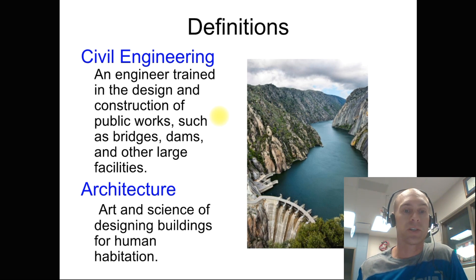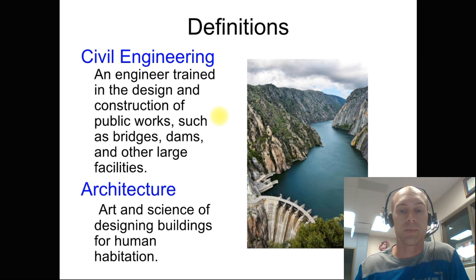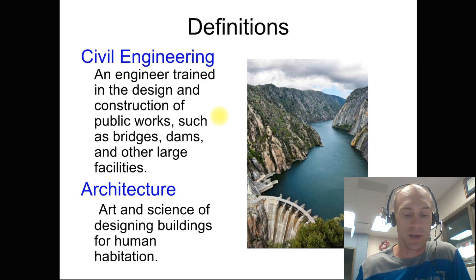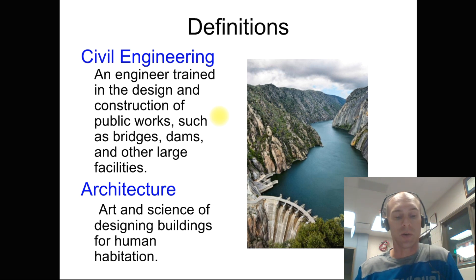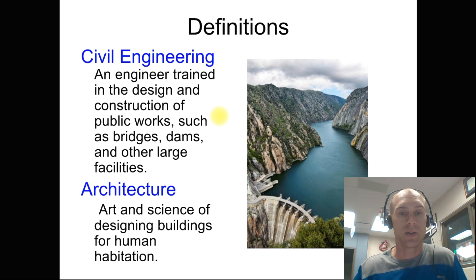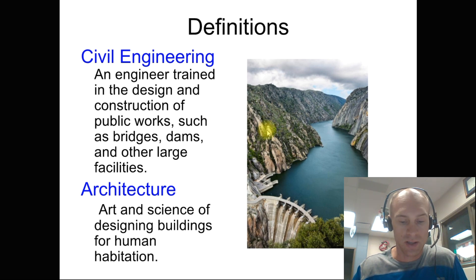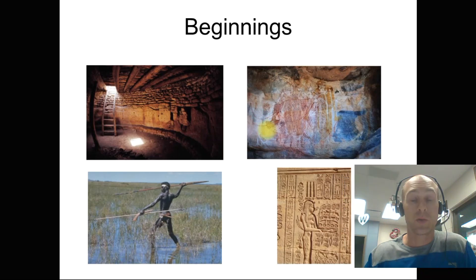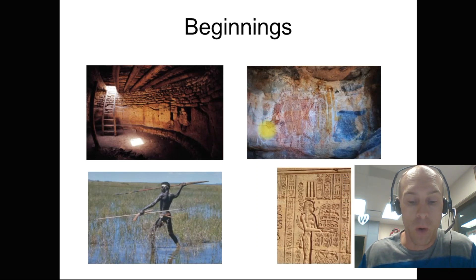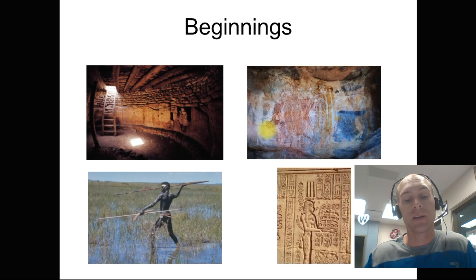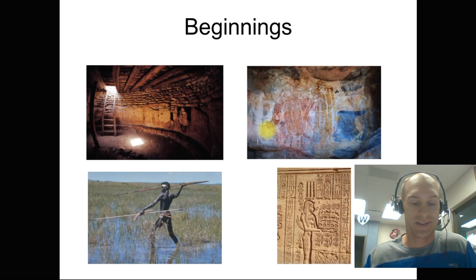Civil engineering involves things like bridges and dams, which may not necessarily be habitation-type structures. That's the big distinguishing characteristic — architects design things for human habitation. Architecture was born when people began to live in dwellings within communities.